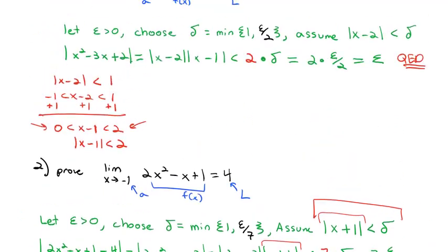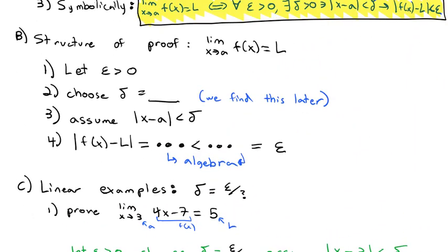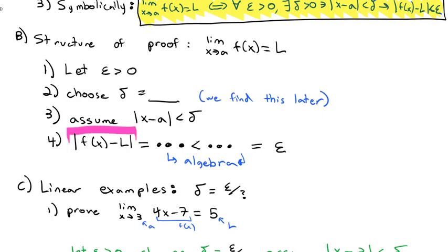That is the general epsilon-delta proof for limits. We work with linear and quadratic examples in this class. You should be very familiar with the proof setup: always let epsilon be greater than 0, choose delta equal to something, assume that the absolute value of x minus a is less than delta, and then show that f of x minus L is less than epsilon. If you do that, you've got a perfect delta-epsilon proof. Practice a few of these and we'll see you in class where we can talk about these proofs in more detail.